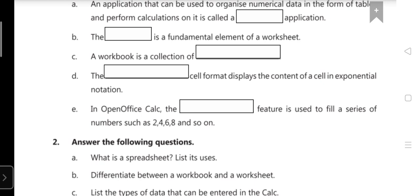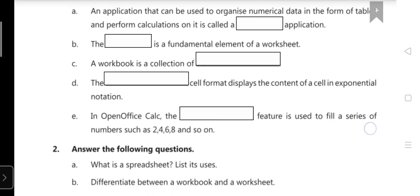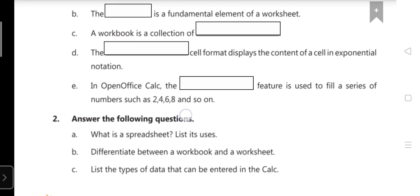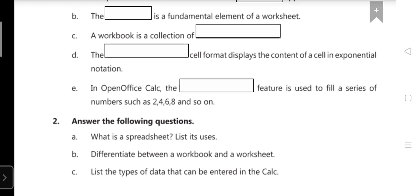E: In OpenOffice Calc, the blank feature is used to fill a series of numbers such as 2, 4, 6, 8 and so on. Answer is autofill. Remember, autofill is always used to fill the series. Whenever the word is there, write down the answer: autofill.